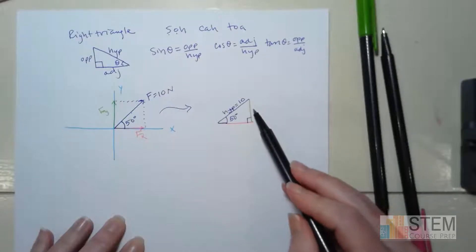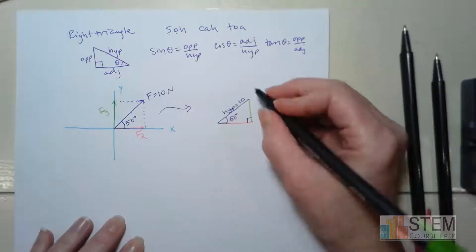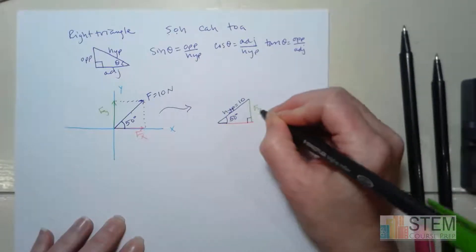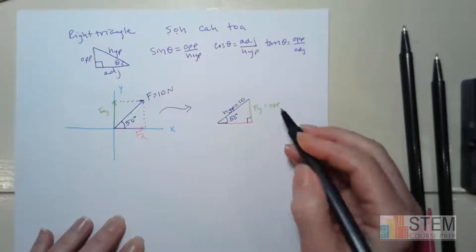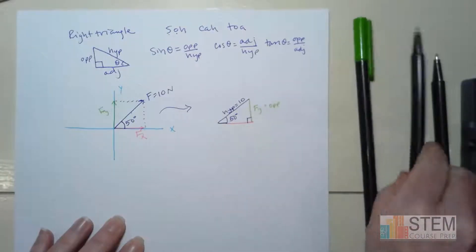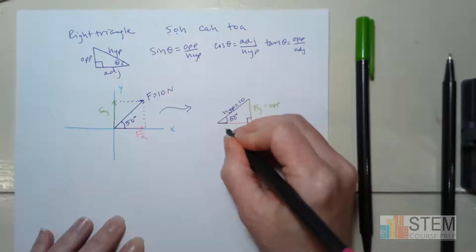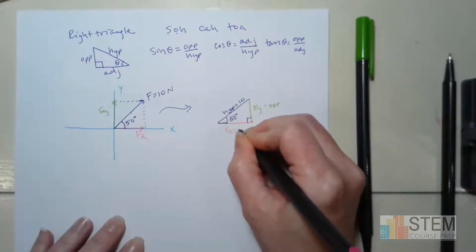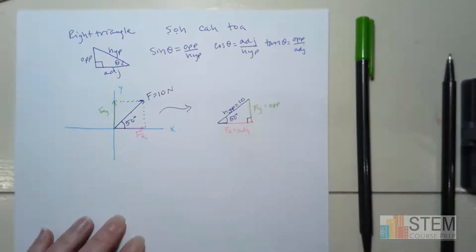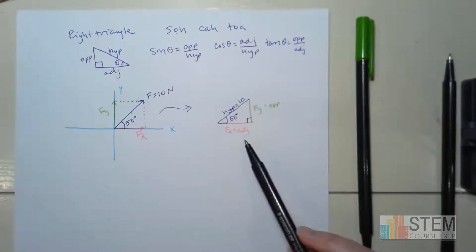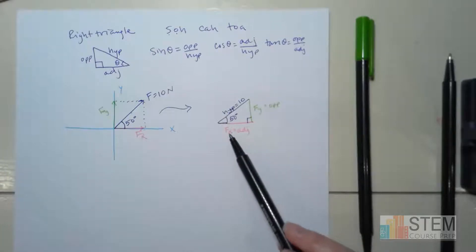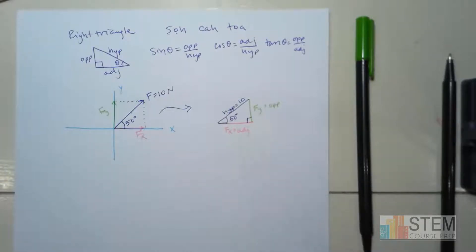FY right here is the opposite side of the angle, and then FX is the adjacent side. So now what we're wanting to do is essentially solve for FX and FY — that's what we're looking for.